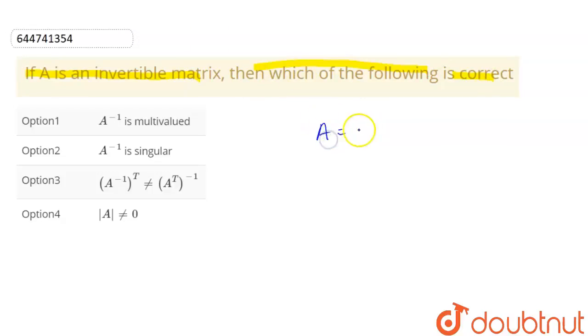We have been given that A is an invertible matrix, right? And if A is invertible, that means A inverse exists and A inverse is equal to adjoint of A upon A determinant.